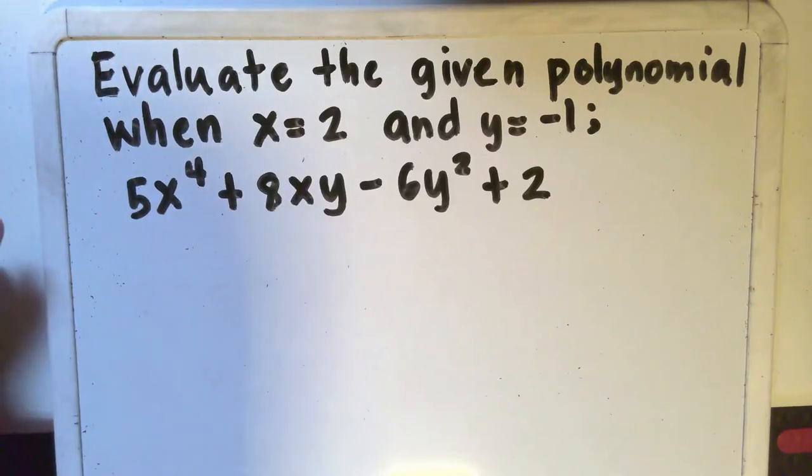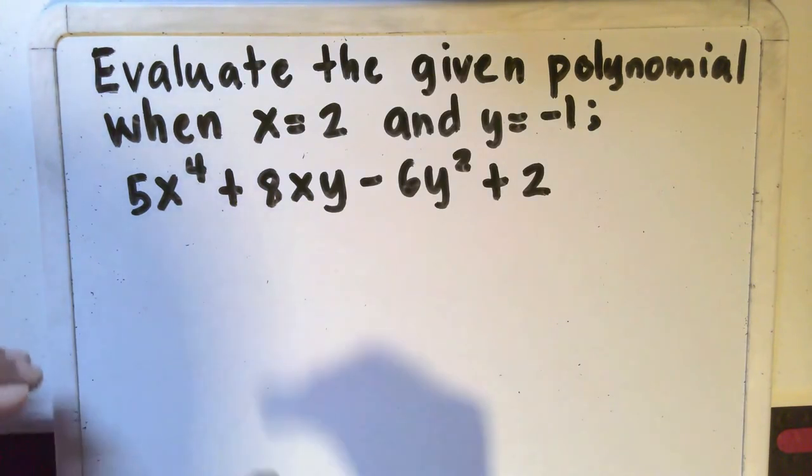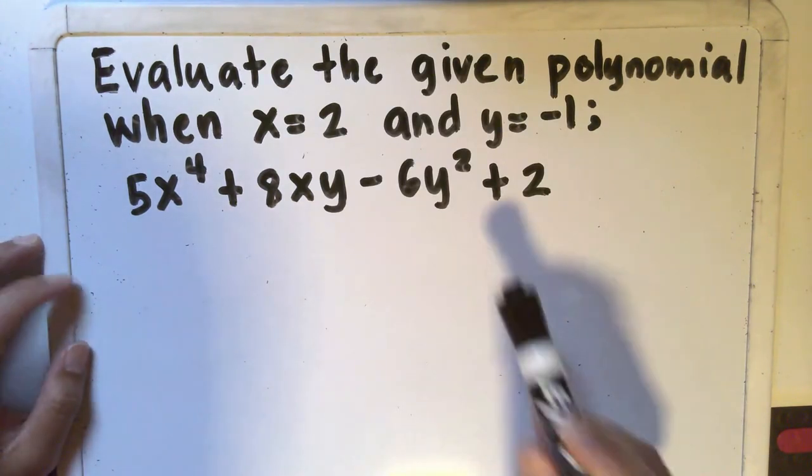Let's say you're given a task to evaluate the given polynomial when x is equal to 2 and y is equal to negative 1. The given polynomial is 5x to the 4th plus 8xy minus 6y squared plus 2.